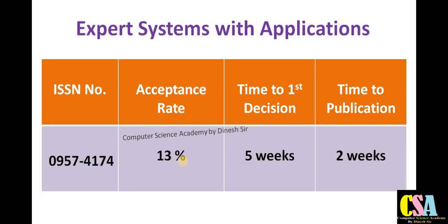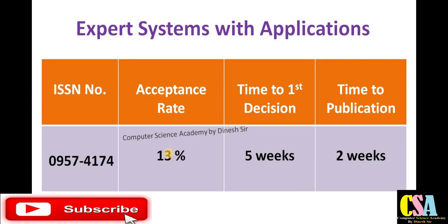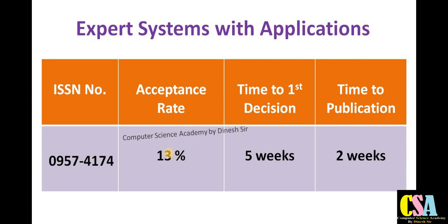The next journal title is Expert Systems with Applications. The ISSN number is 0957-4174. The acceptance rate is 13 percent. This journal always requires original research, so if you have original content submit your paper here. The first decision notification comes from the journal editor within five weeks, most probably within a month. From submission to publication is most probably seven weeks — within two months your research paper will get published in this Scopus and SCI index journal.